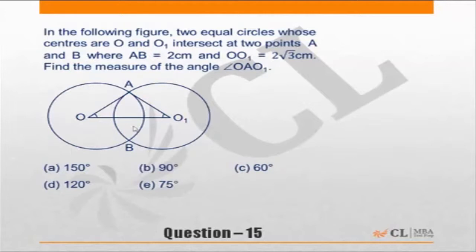AB is 2cm. This length is 2, that means from this point to this point it will be 1. And OO₁ is 2√3.